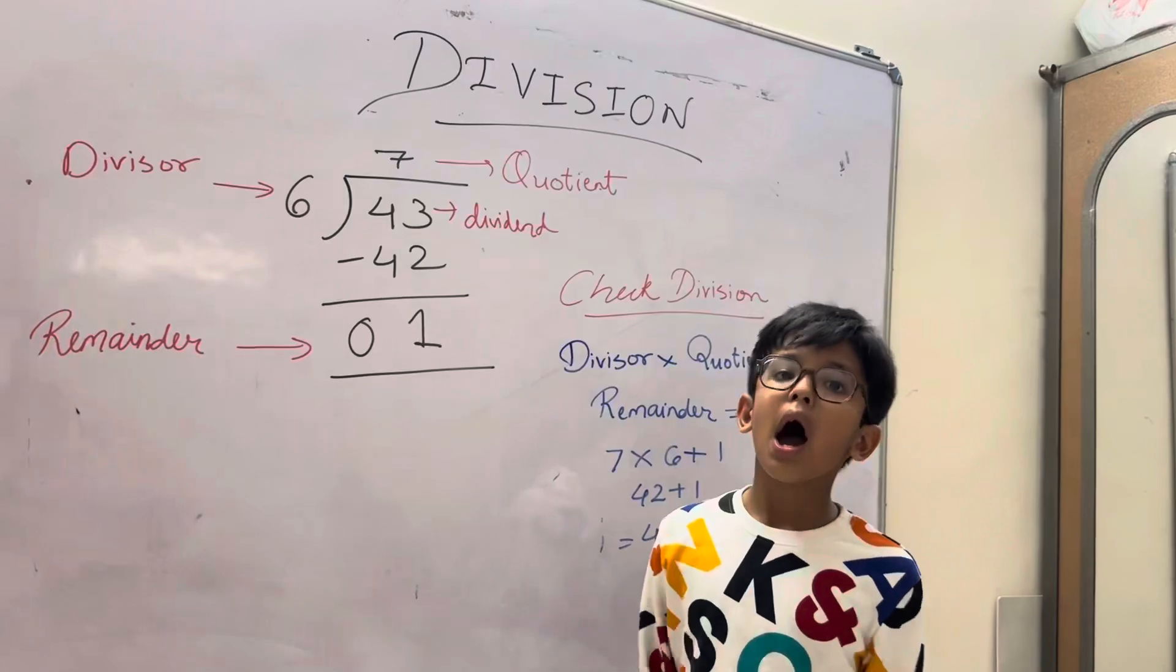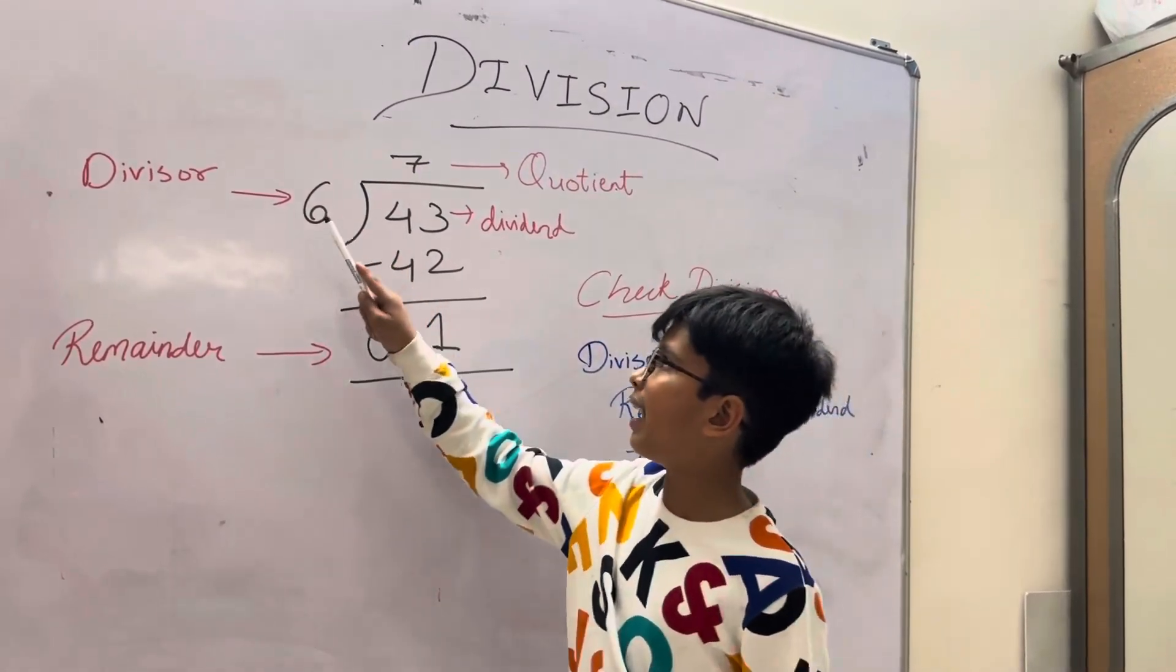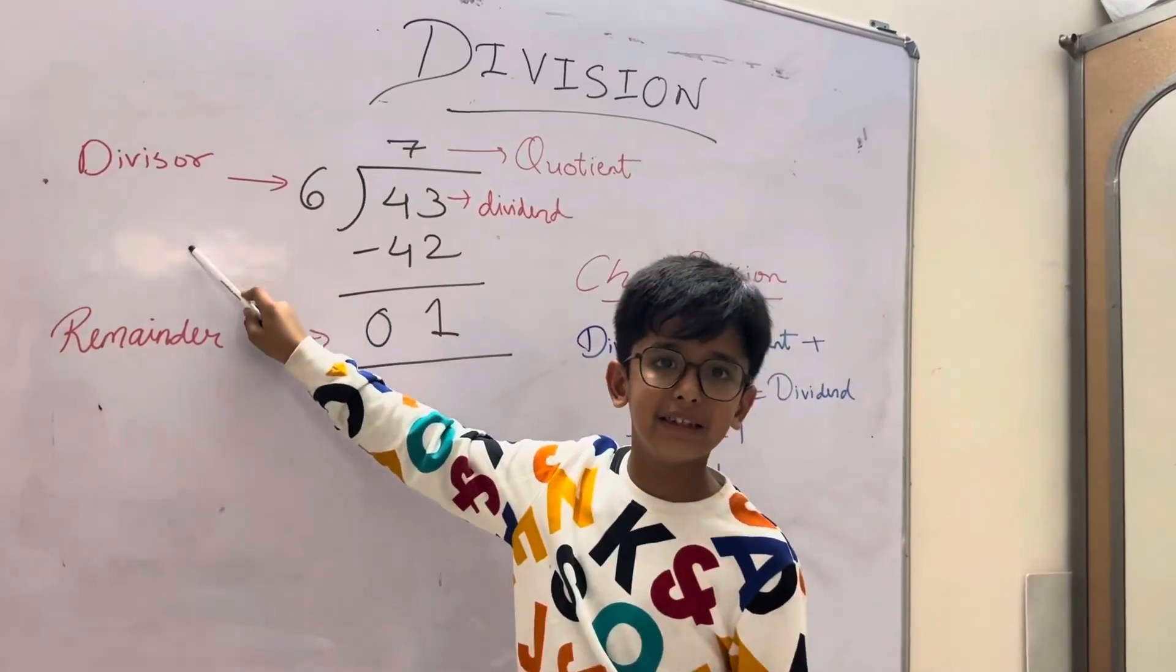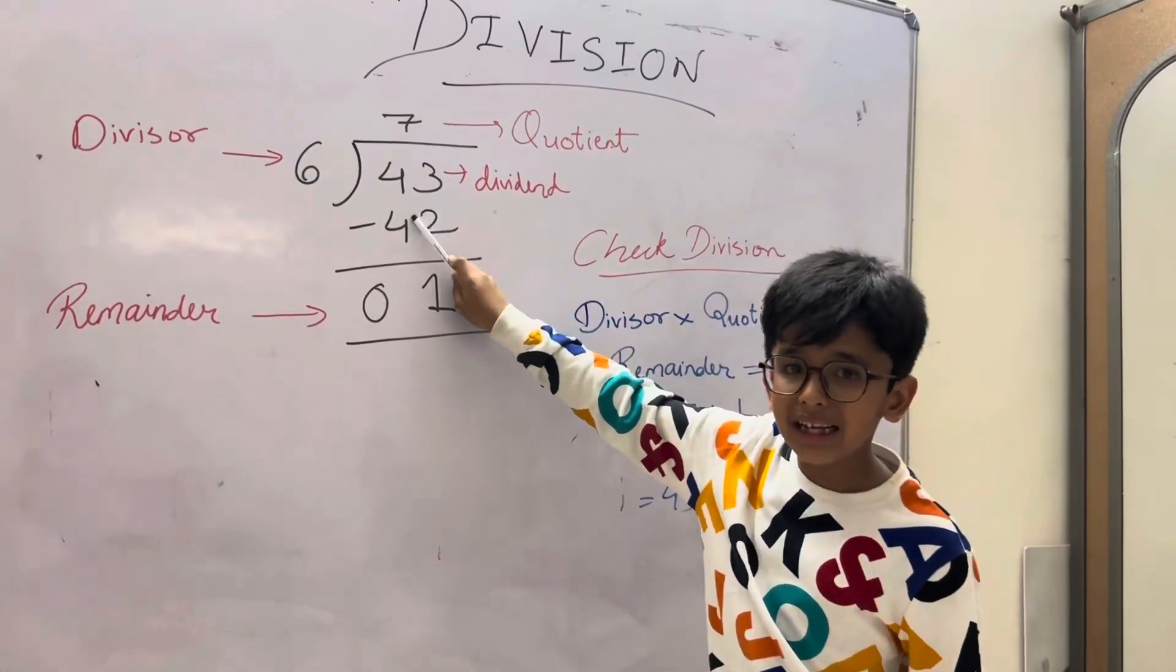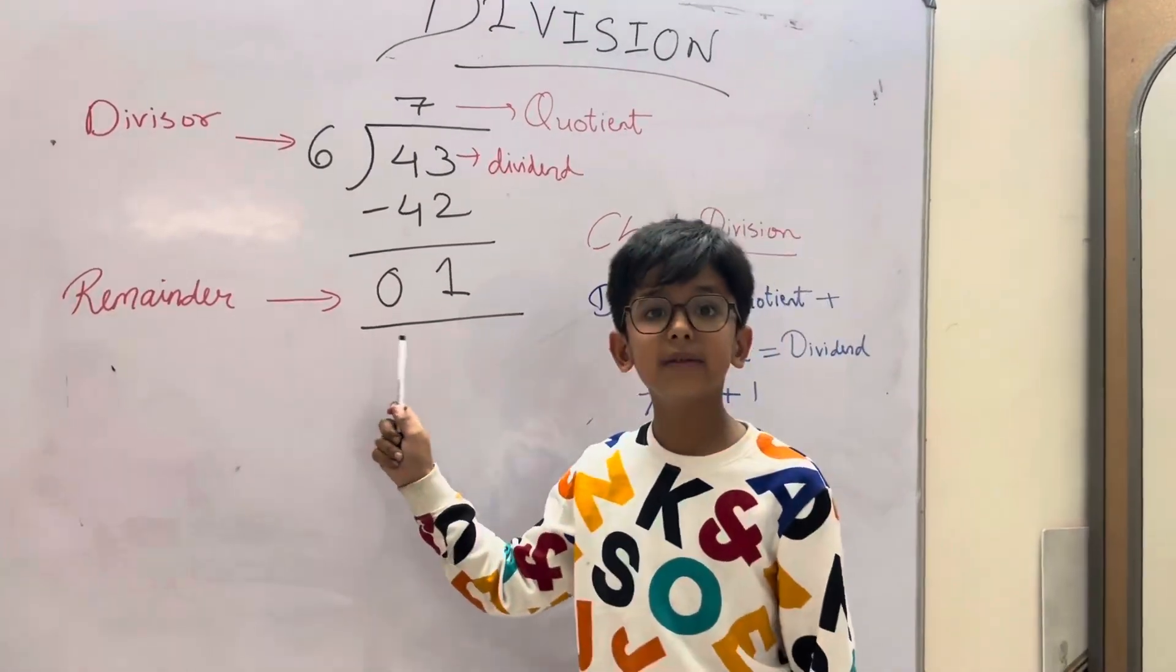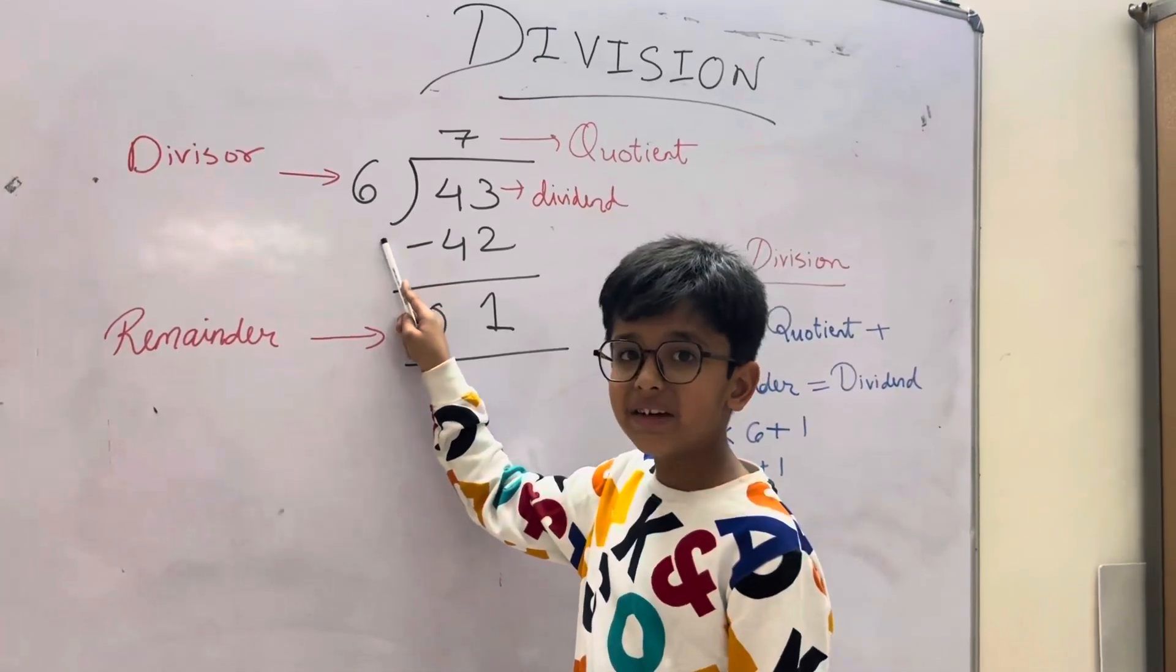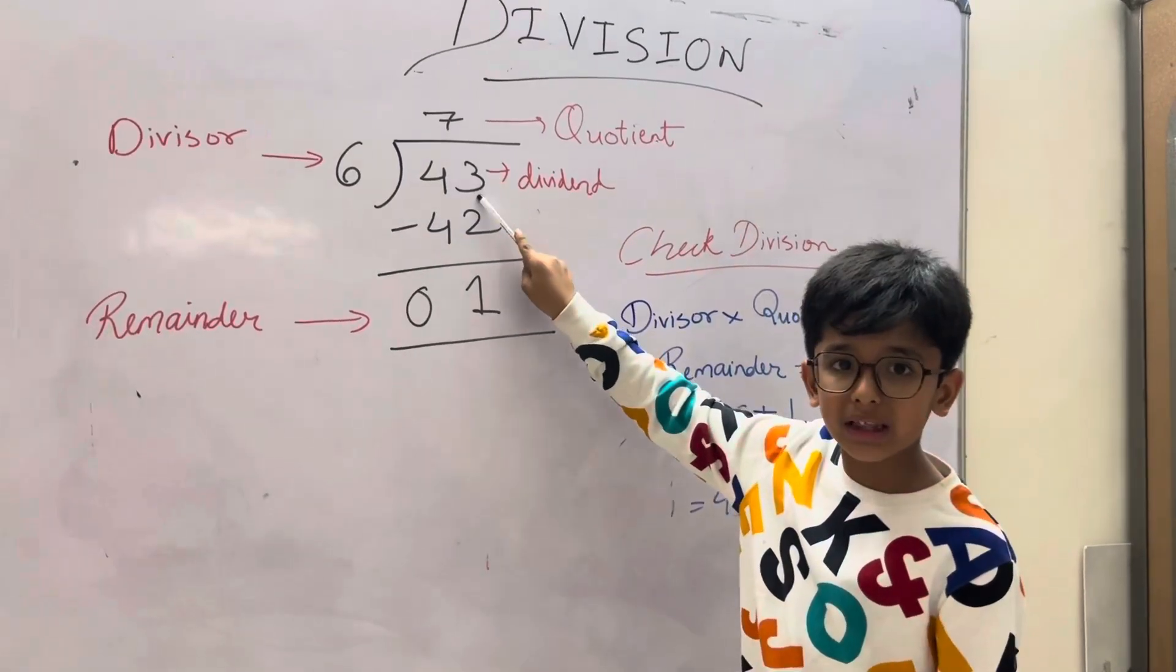So we learn how to divide and check the answer. So first we have to divide 43 divided by 6. Now what is divisor? 6 is divisor. Then what is dividend? 43 is dividend. First we will take the 4. 6 divided by 4, is it possible? No. So we take the 43.